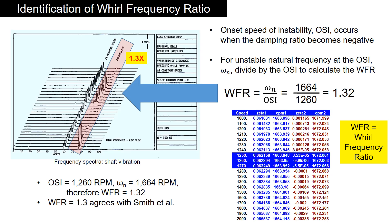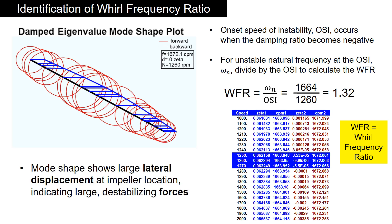Predicted results from the simulation matched with test measurements. Mode shapes show large lateral displacement at the impeller location, which could lead to rubbing due to large motion.